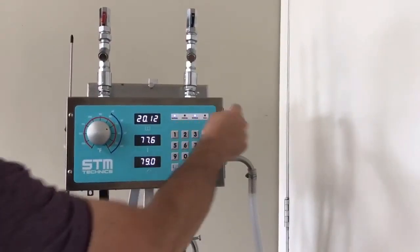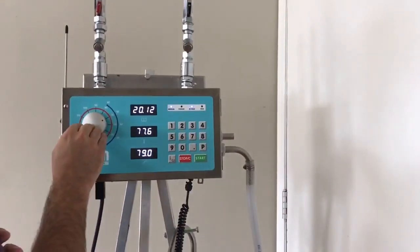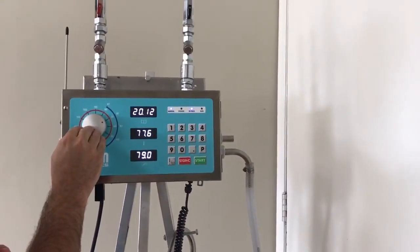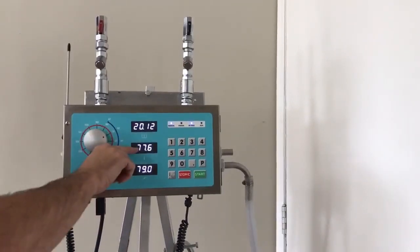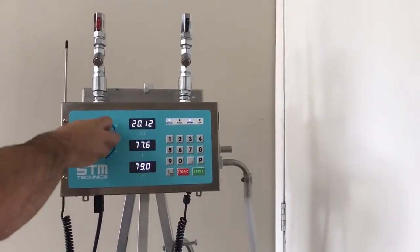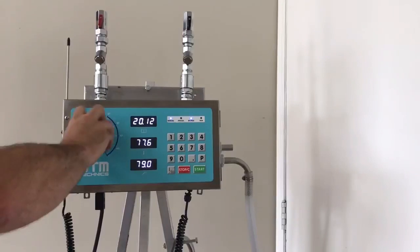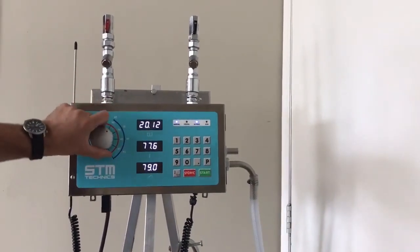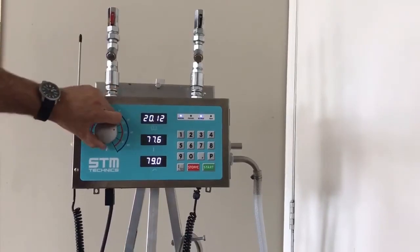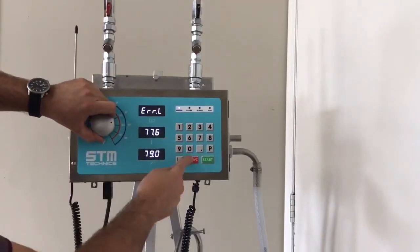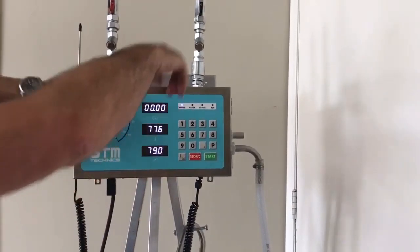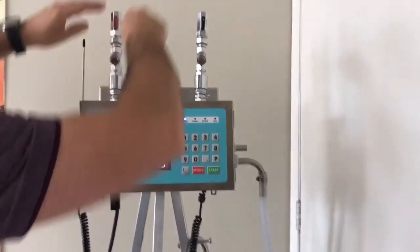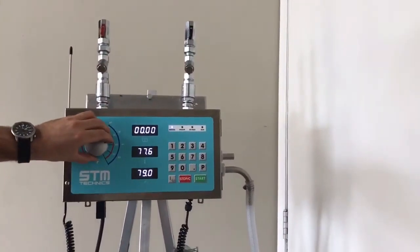The unit will start bypassing the water into the sink until we've reached our set temperature. To dial in our set temperature, we use this dial, which is hot or cold. This is a rough-in dial. It zeroes in our temperature to the set point. The unit shows air because we have no water coming into the unit. This is just for training purposes.